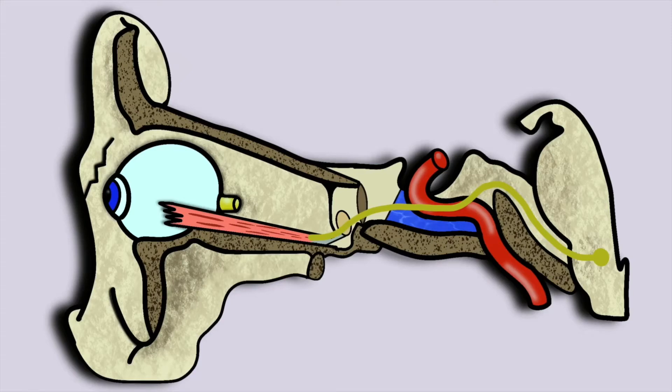Once in the orbit it innervates the lateral rectus muscle, providing motor function. The lateral rectus is one of the six extraocular muscles responsible for producing eye movement, and is responsible for abduction of the eye.